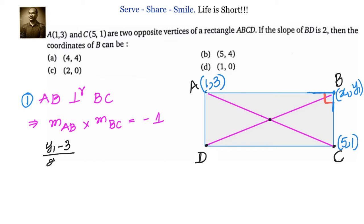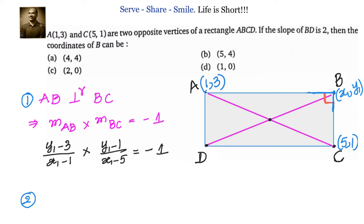Let's write the slope of AB: it is Y2 minus Y1 over X2 minus X1, that is Y1 minus 3 over X1 minus 1. Multiplied by the slope of BC, which is Y1 minus 1 divided by X1 minus 5, equals minus 1.